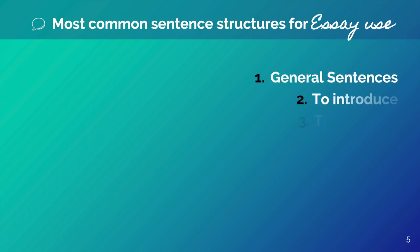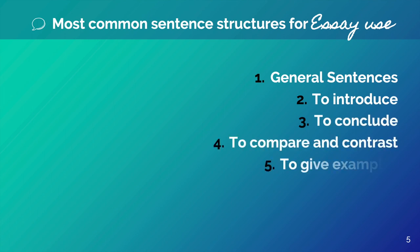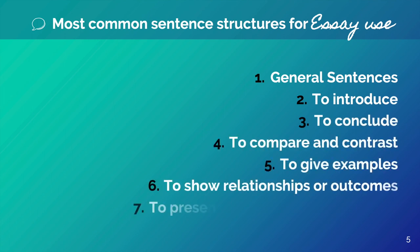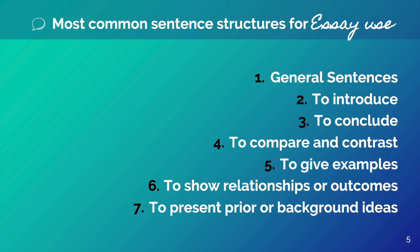I divided the sentences into seven groups. The first ones are general sentences. The second group is to introduce ideas or to introduce a topic. The third one is to conclude a paragraph or your idea. The fourth one is to compare and contrast. The fifth one is to give examples. The sixth is to show relationships or outcomes. And the seventh is to present prior or background ideas.